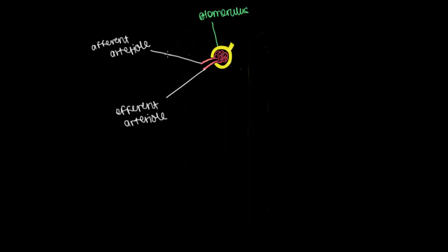So the afferent arteriole goes in, becomes really, really squiggly, and then it comes off as a single vessel, the efferent arteriole. In this process, a ton of fluid is filtered out of the blood and goes into this yellow capsule right here. This is Bowman's capsule.